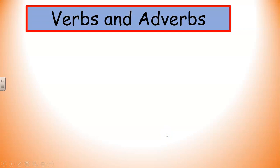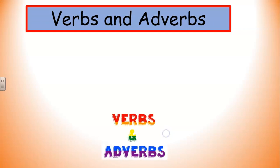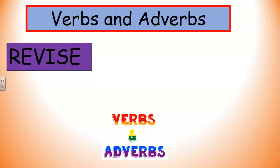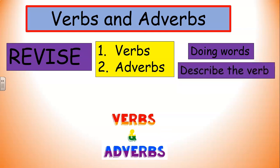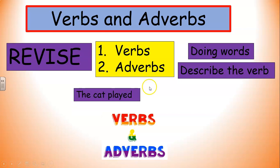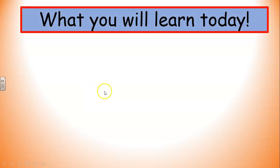We're going to be recapping on verbs and adverbs that we did yesterday, so let's revise this topic and see if you remember what you learnt, Grade 3. Did you remember that a verb is a doing word and that adverbs describe the verb? For instance, the cat played — 'played' is the verb. How did the cat play? The cat played happily. So 'happily' is the adverb. It is adding to the verb.